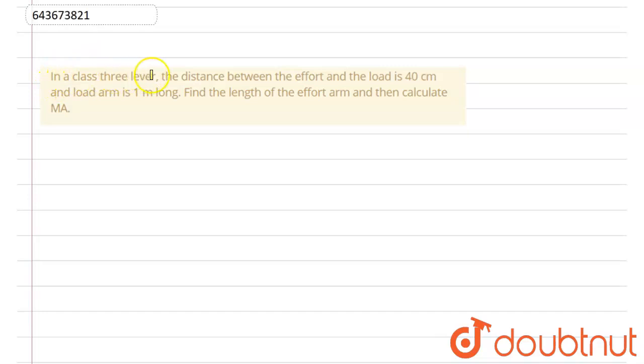We are asked: in a class 3 lever, the distance between the effort and the load is 40 centimeters, and the load arm is 1 meter long. Find the length of the effort arm and then calculate MA, that is mechanical advantage.